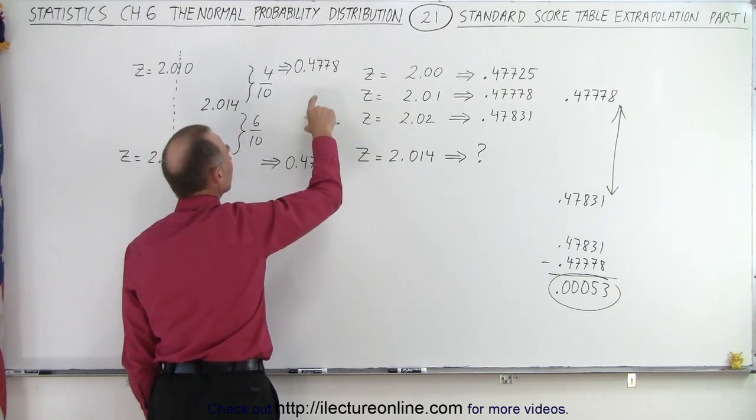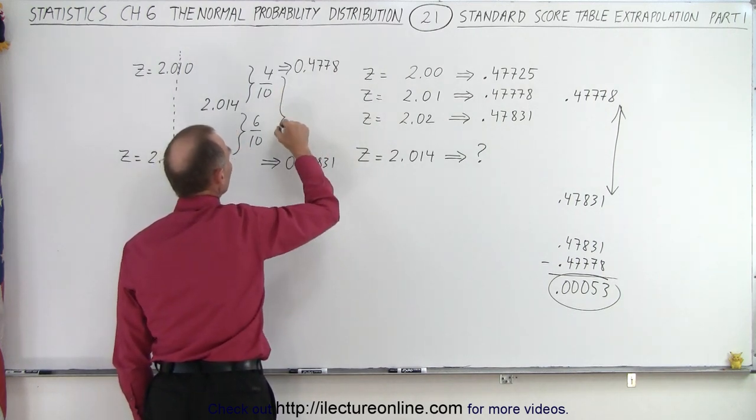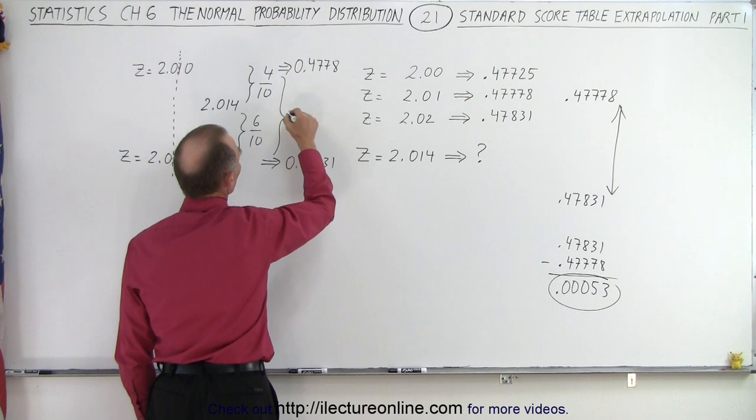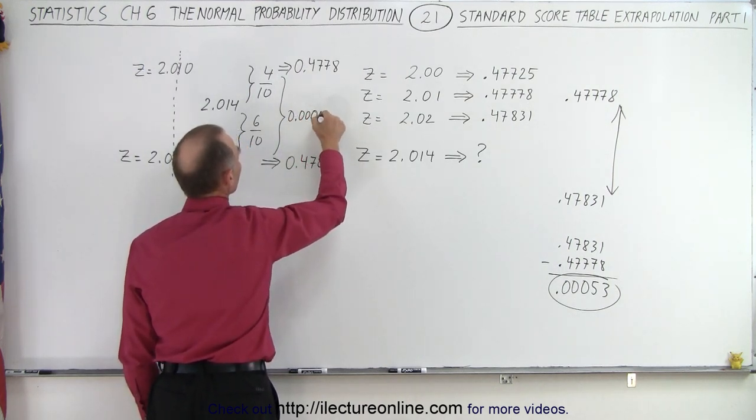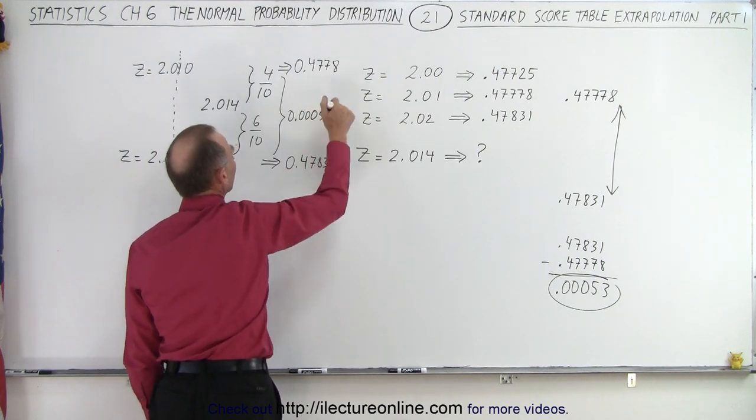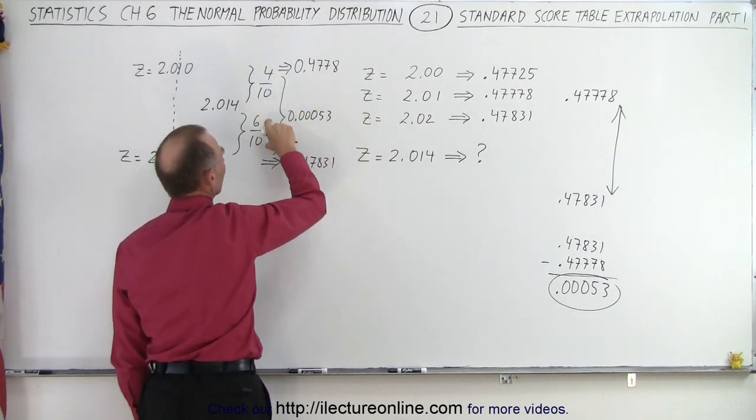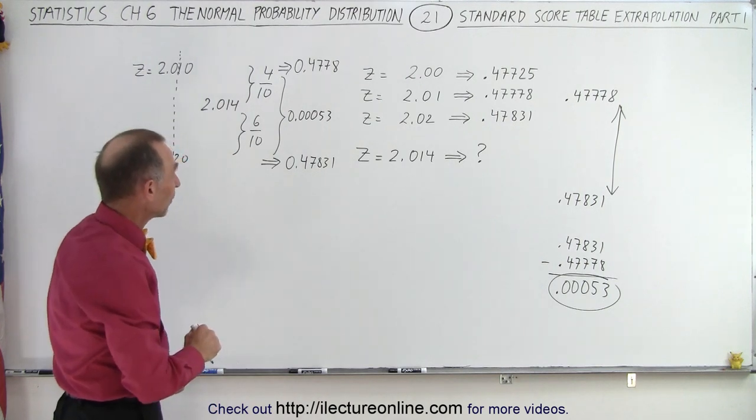So now the question is, since the distance between these two is 0.00053, how much of a distance here is 4 tenths and how much of the distance is 6 tenths? That's what we're looking for.